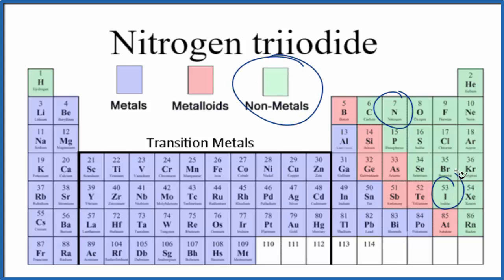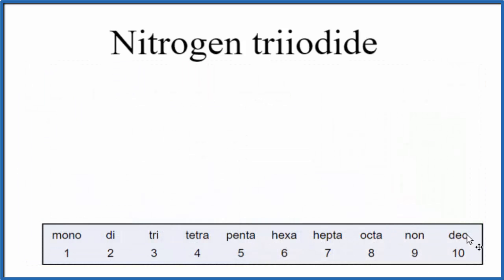These are nonmetals. When we have two nonmetals, it's a molecular compound. So we don't have to worry about ionic charge, but we do need to think about the prefixes here that are used when we write the formula for nitrogen triiodide.